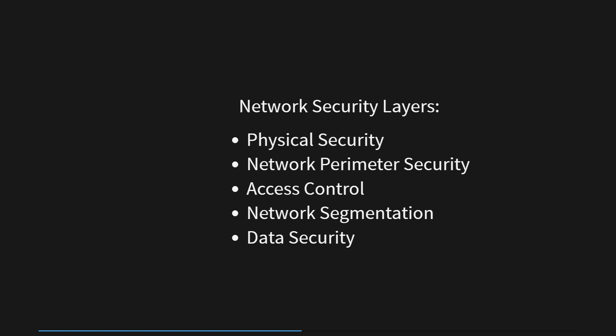Network security is a multi-layered approach that combines various strategies to safeguard an organization's network and data from potential threats. Physical security focuses on securing network devices in locked rooms, implementing biometric access controls, and using surveillance systems to prevent unauthorized physical access. Network perimeter security utilizes firewalls and intrusion detection/prevention systems (IDS/IPS) to examine incoming and outgoing traffic, enforcing predefined rules to allow or block data packets, and monitoring network traffic for suspicious patterns.